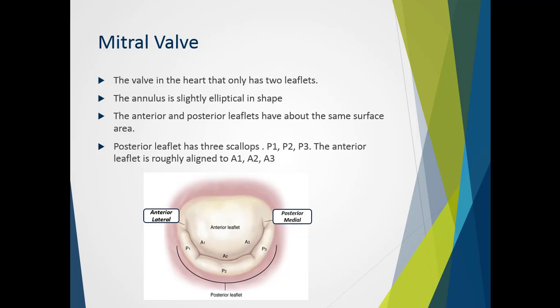The anterior leaflet does not have the same definitive markers, but is roughly also labeled A1, A2, A3. When reviewing from echo, we have a mirror image — this is the lateral side and this is the medial side. This is more of a surgeon's interpretation where they view the valve from above. The posterior leaflet comes around and takes about two thirds of the annulus size, while the anterior leaflet takes about one third, but the surface areas of the two leaflets would be roughly equivalent.